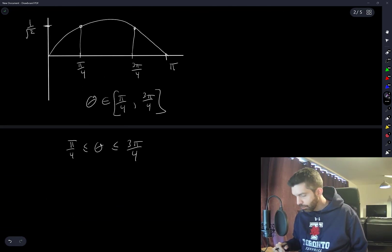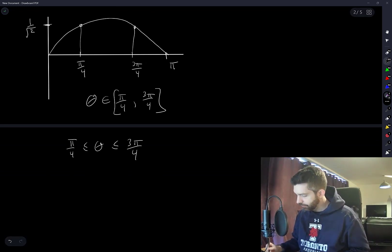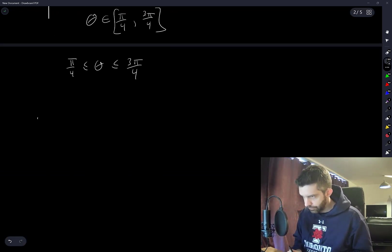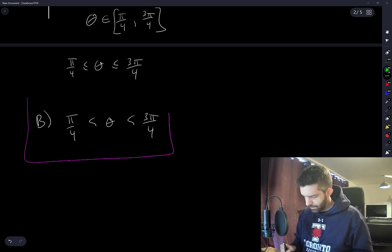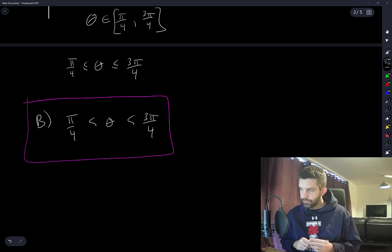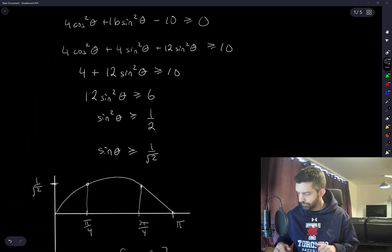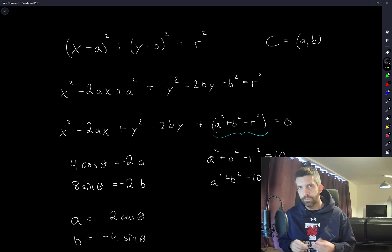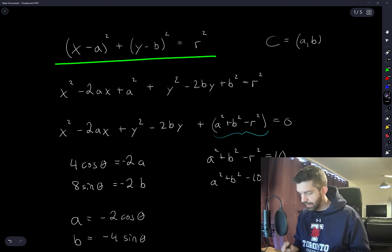So if I were going through this more carefully, I suppose I would have kept strict inequalities. But the only option given to us that comes even close to this is option B with π/4 strictly less than theta, strictly less than 3π/4. Yeah, there might be a nicer way of doing this, I suppose.